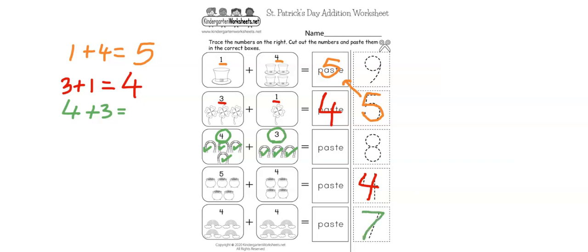We write the number 7 here. 4 plus 3 equals 7. Let's do another one: what is 5 plus 4? Let's count them: 1, 2, 3, 4, 5, 6, 7, 8, 9. This is the number 9, so we are going to write the number 9 over here.